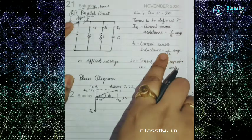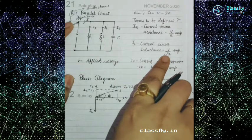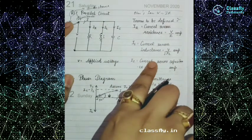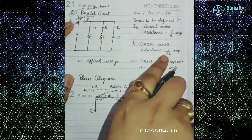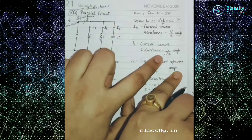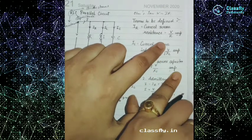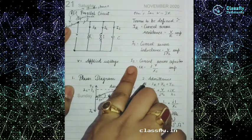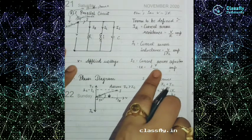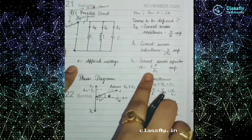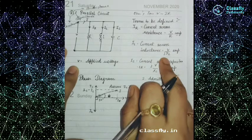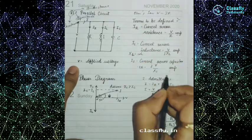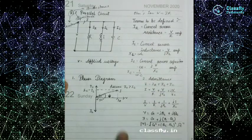The j is in the denominator because in an inductance the current lags by 90 degrees. For a capacitor, j is in the numerator, which states that the current leads by 90 degrees. So IC, the current across the capacitor, is j·V / XC. Also, XL can be written as ω·L and XC as 1/(ω·C).